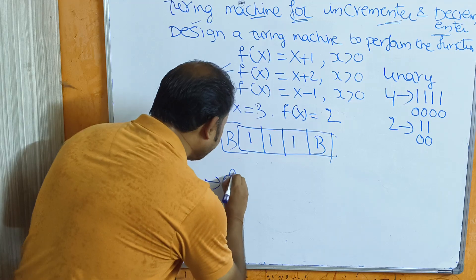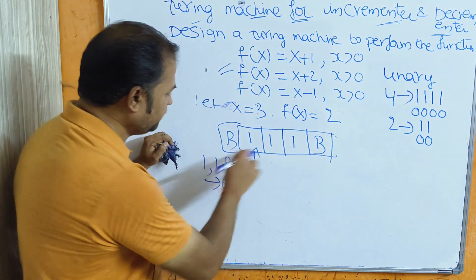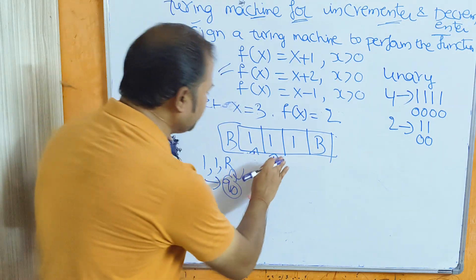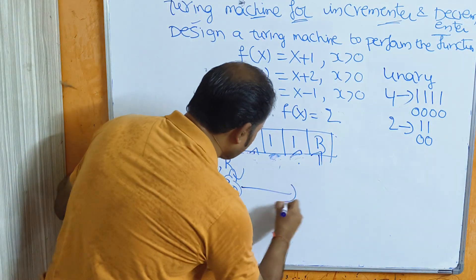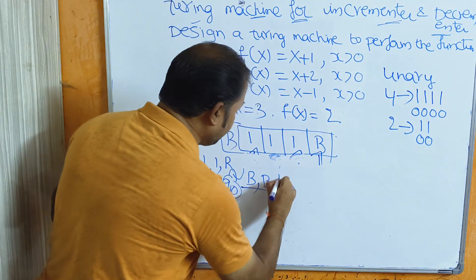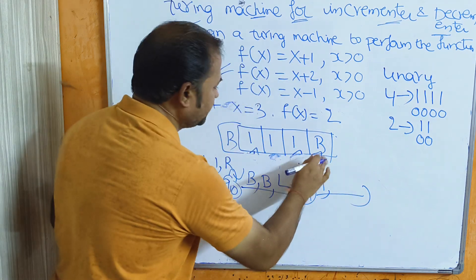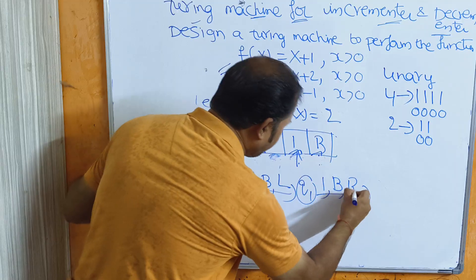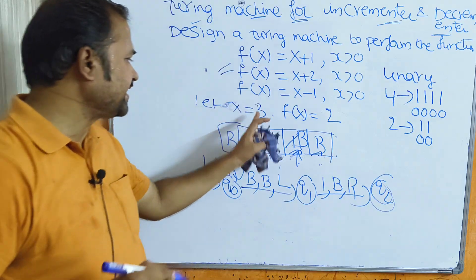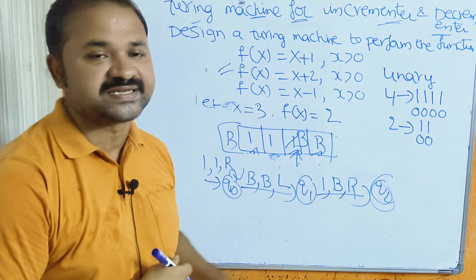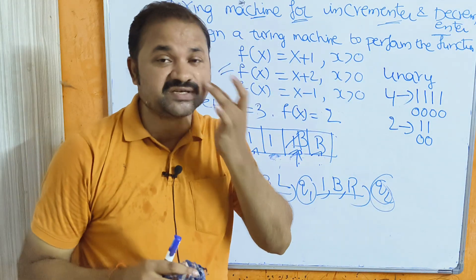On Q0, if you read any number of 1s, keep them the same and move the head towards the right. When you read the blank symbol on Q0, replace it with a blank symbol and move the head towards the left. Now we are at Q1 state. On Q1, if you read 1, replace that 1 by a blank symbol and move the head towards the right. Initially the data is 3; now we have two 1s, which is nothing but 2. In this way, we can design the Turing machine for any function very easily.